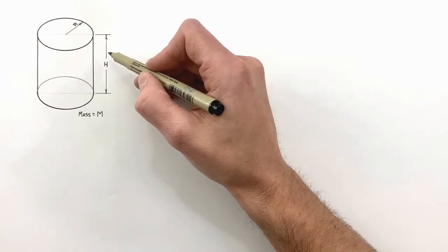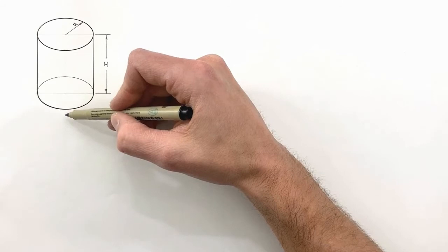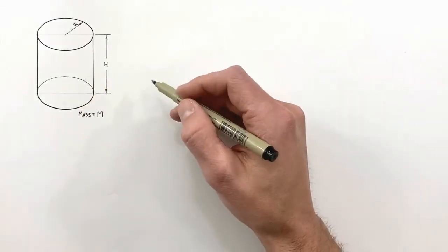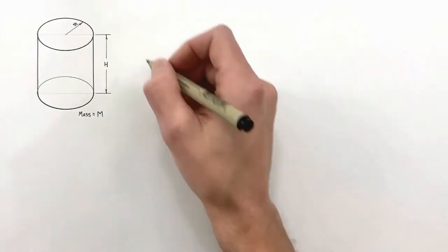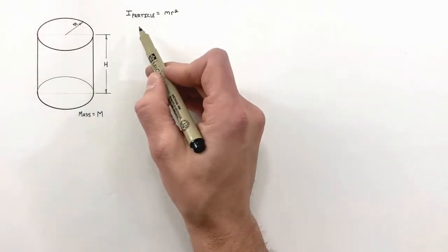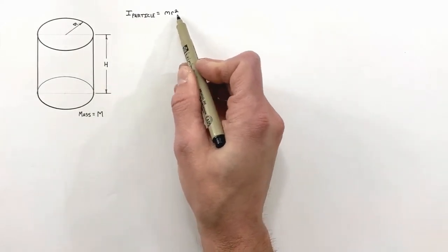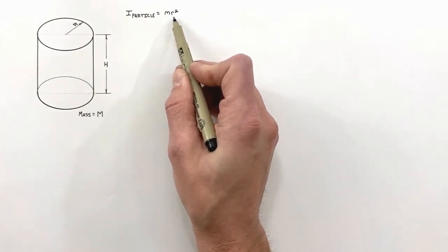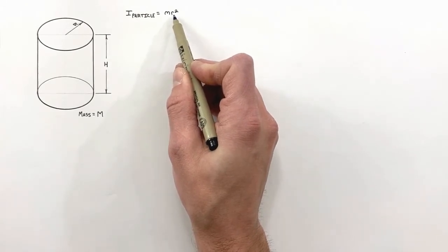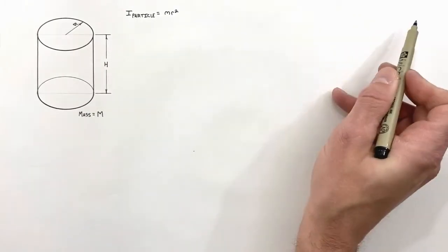To derive the moment of inertia of this cylinder around a central axis, first I want to take a look at the rotational moment of inertia of a particle relative to an axis. The rotational moment of inertia of a particle around any axis is given by the equation mr², where m is the mass of the particle and r is the distance between the particle and the axis around which it is rotating. I won't derive this here - if you want to see the derivation, just click up here.